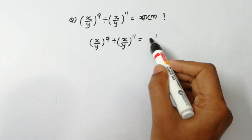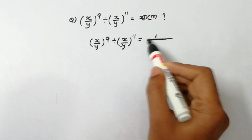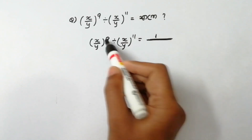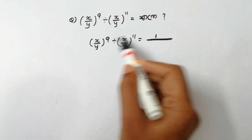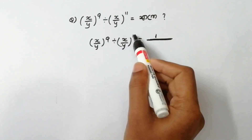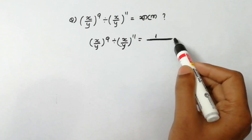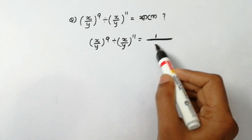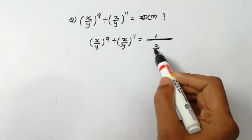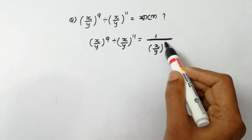We do this: 1 divided by the same base. The answer will be 1 by (x/y) raised to 2.